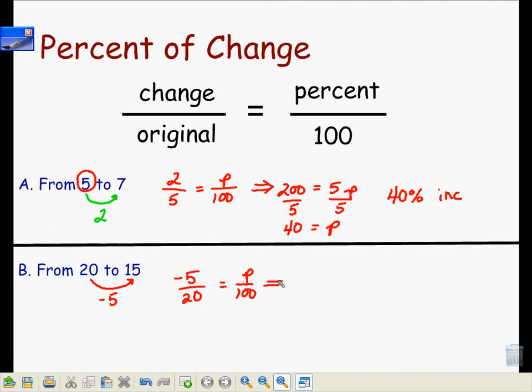Again, let's cross-multiply. Negative 5 times 100 is negative 500, is equal to 20 times P. I will now divide by 20, and that gives me a negative 25 is equal to P.